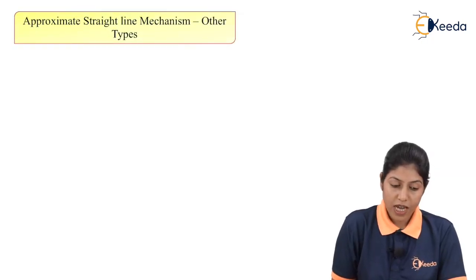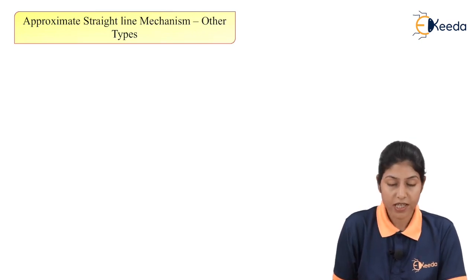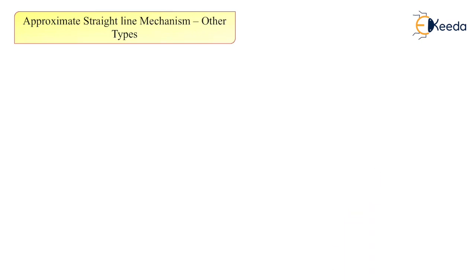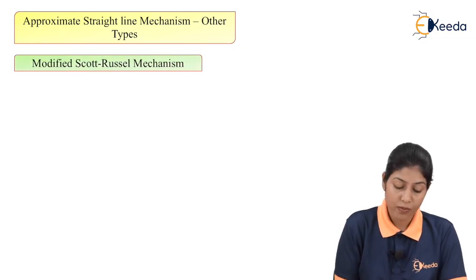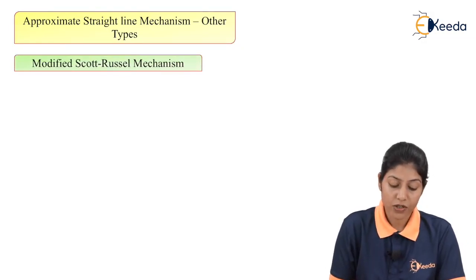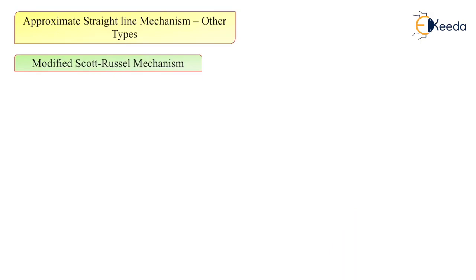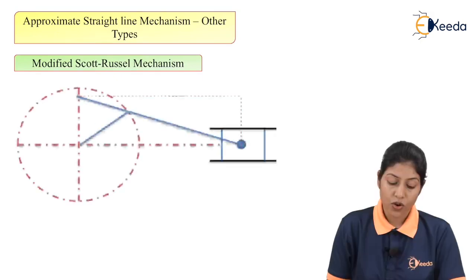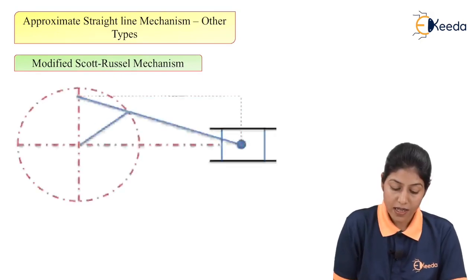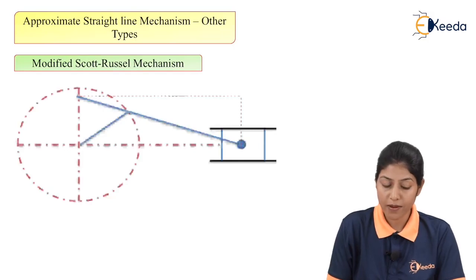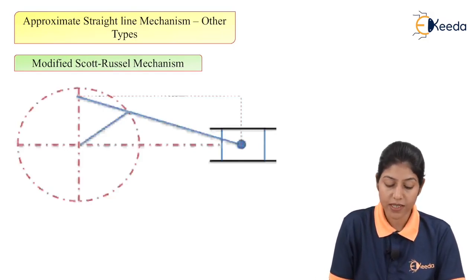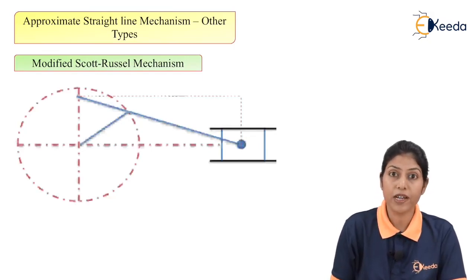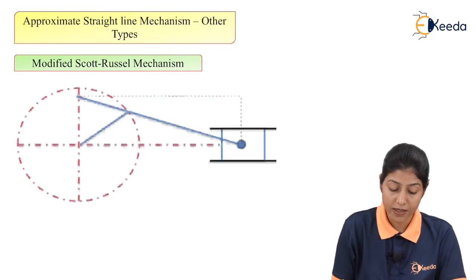The first type of mechanism I have discussed was the Watts mechanism. Now the second type of mechanism is the modified Scott-Russell mechanism. As we know, in the Scott-Russell mechanism, if we define the different links of this mechanism, we get a particular configuration.